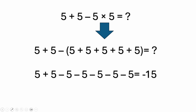Multiplication is nothing more than shorthand for repeated addition. You can replace 5 times 5 with 5 plus 5 plus 5 plus 5 plus 5. Since this is minus 5 times 5, you have a negative sign that affects all of those fives. So when you add and subtract all of that, you get negative 15 — the same answer as doing the multiplication first.